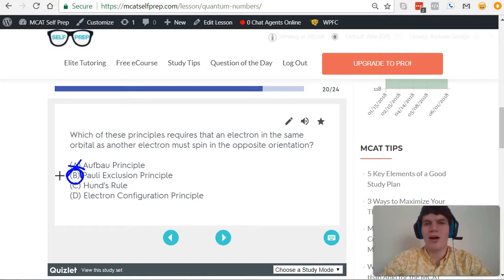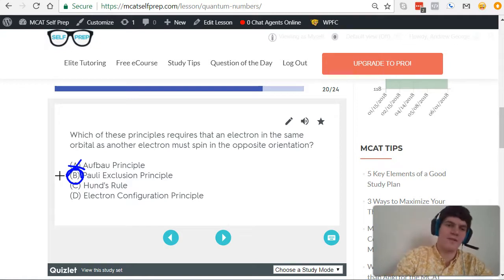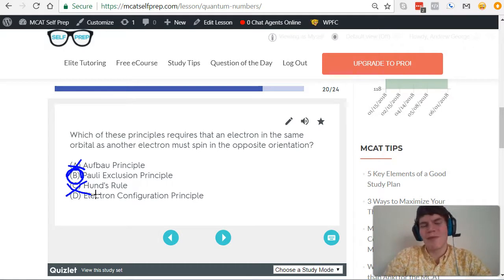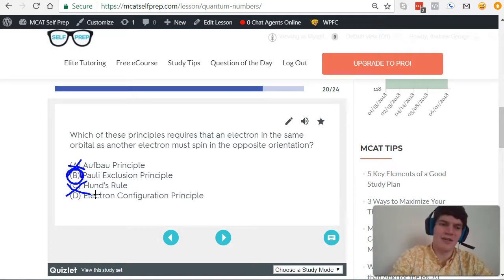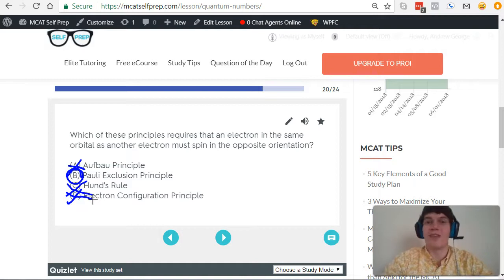Now what about Hund's rule? Remember, Hund's rule states that we need to fill the school bus one seat at a time before we double up. And that does not really have anything to do with electrons spinning in opposite directions. It just dictates the order that orbitals must be filled. Therefore, Hund's rule is not it. And electron configuration principle, that's just a made-up term on the MCAT. Make sure to be wary of those terms that look good, sound good, but are not good. Because it's not even a term that you need to know for the MCAT.